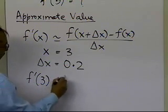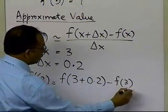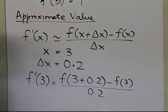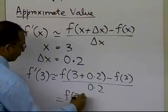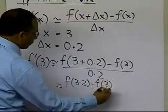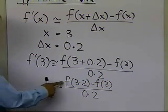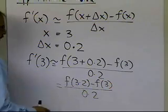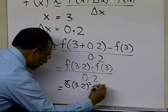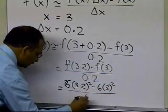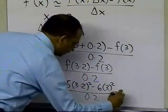Substituting into the approximate formula, f prime of 3 is approximately equal to f(3 + 0.2) minus f(3), divided by 0.2 — that is, f(3.2) minus f(3), divided by 0.2. Substituting the function gives us 6 times 3.2 squared, minus 6 times 3 squared, divided by 0.2.